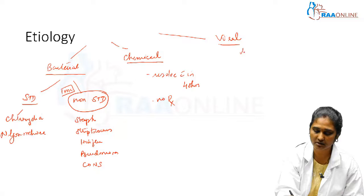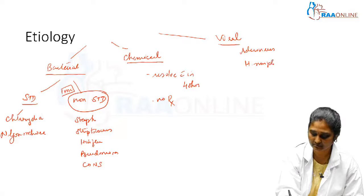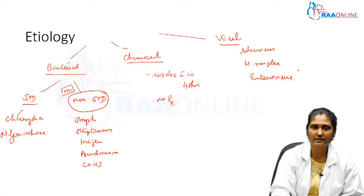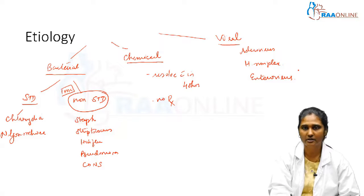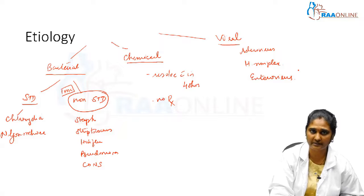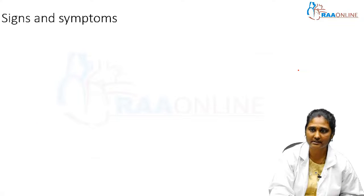Viral-induced conjunctivitis is caused by adenovirus, herpes simplex, and enterovirus. These are not very commonly seen. This completes the etiology of neonatal conjunctivitis.